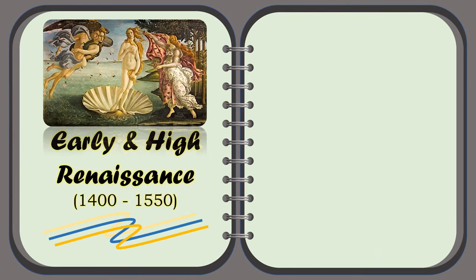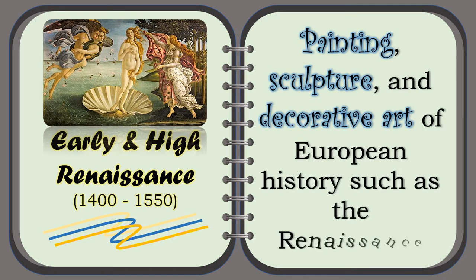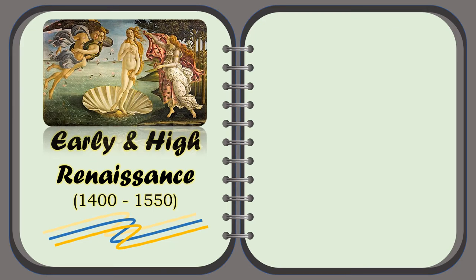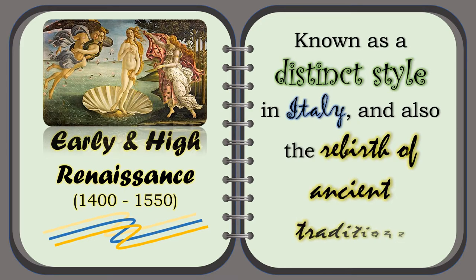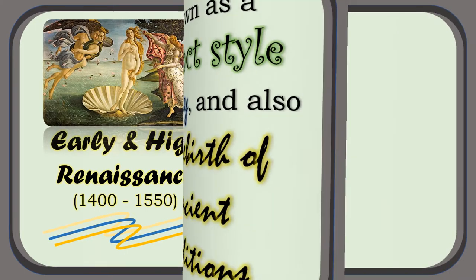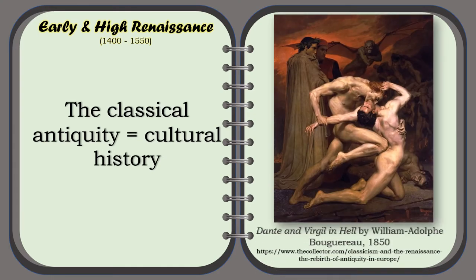The Early and High Renaissance. Painting, sculpture, and decorative art of European history such as the Renaissance is known as a distinct style in Italy and also the rebirth of ancient traditions — the Classical Antiquity, that is, the Italian Cultural History. For example, the painting of William Adolphe Bouguereau in 1850, the Dante and Virgil in Hell.